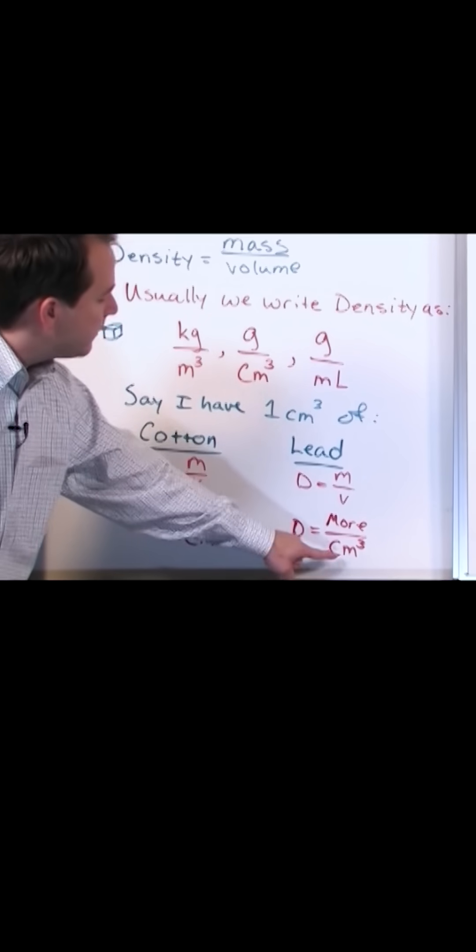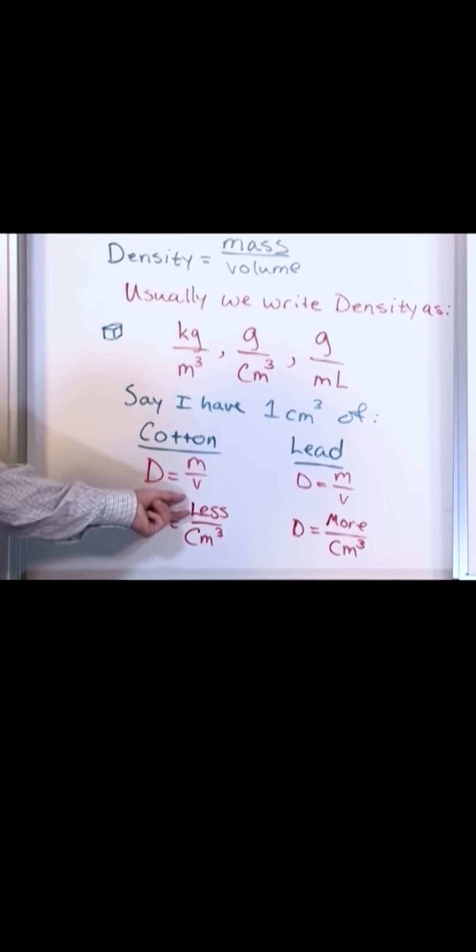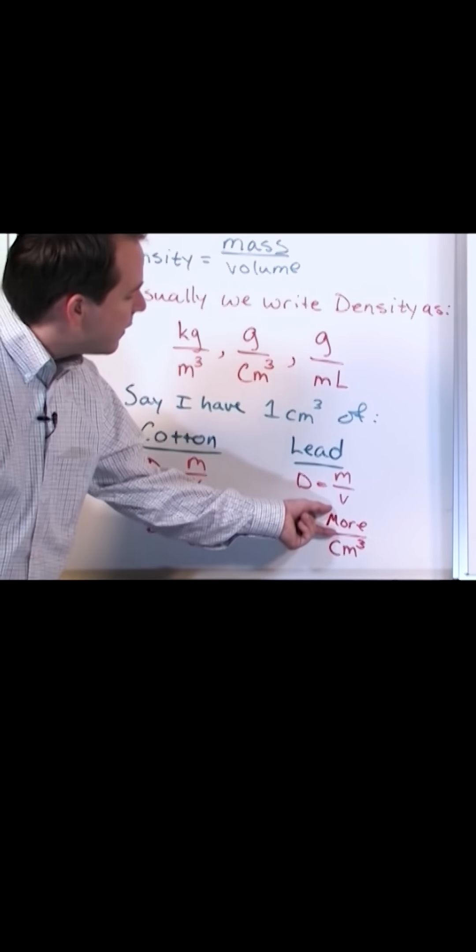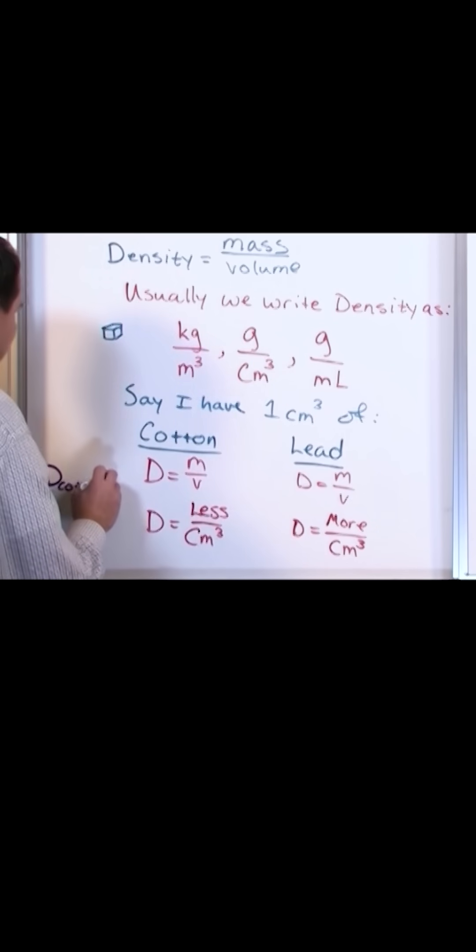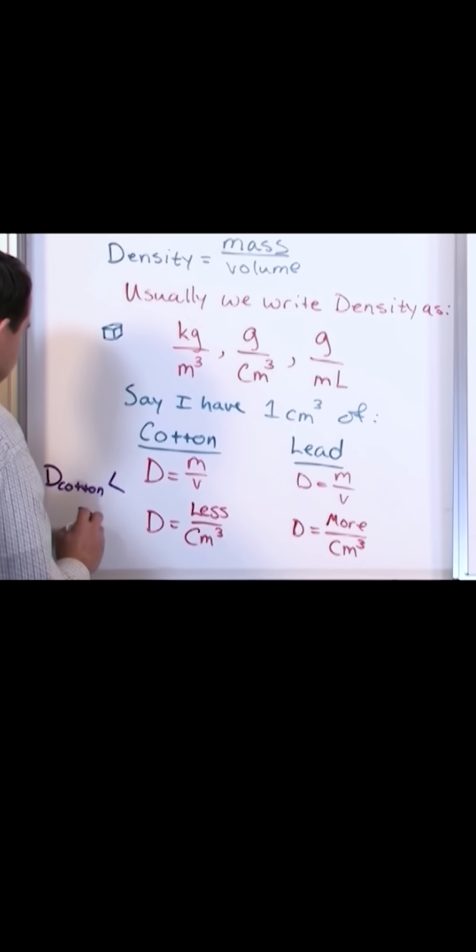So if I have one cubic centimeter in both cases, then I'm going to have less mass of cotton and, relatively speaking, more mass of the lead. Density of the cotton is less than the density of the lead.